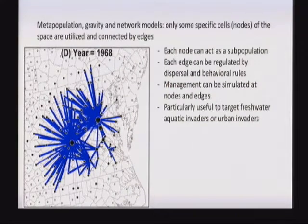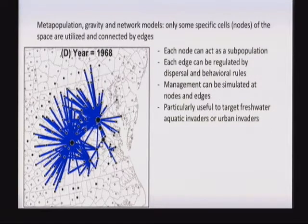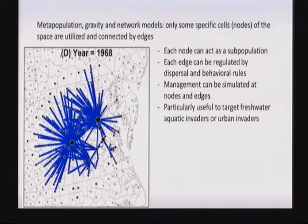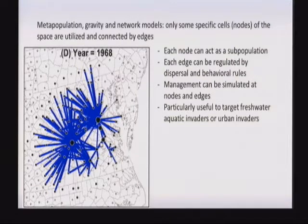This kind of approach is very useful for freshwater aquatic invaders — for example fish or frogs that are colonizing a specific subset of the area and can only live in water. It is also useful for urban invaders that are only invading urban landscapes, where most of the landscape would not be colonized but urban areas can be. The management can be simulated at nodes and edges — removing specific nodes by managing all individuals there, or removing edges by putting barriers and changing the connectivity of the model.